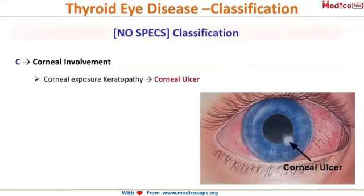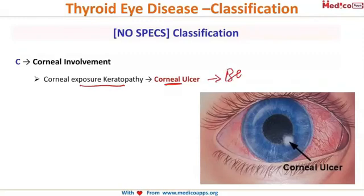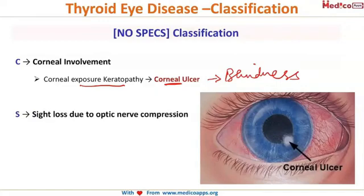C stands for corneal involvement, specifically corneal exposure keratopathy. When the lid is pulled backwards it is not covering or protecting the cornea, making it more predisposed to dryness, resulting in exposure keratopathy, which can cause a corneal ulcer and ultimately lead to blindness.